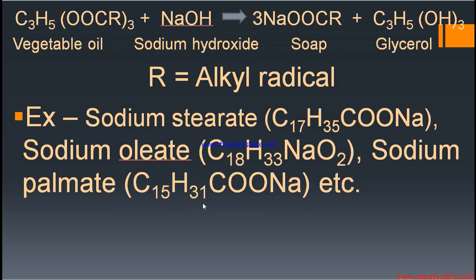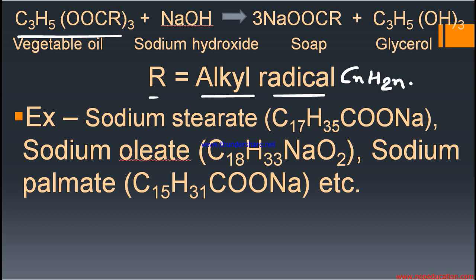For the chemical equation of how soap is prepared: the general formula of vegetable oil is C3H5(OOCR)3, where R is the alkyl radical. The alkyl radical has the general formula CnH2n+1, which is obtained by removing one hydrogen from an alkane. The product is the stearate of sodium, and the alkyl radical is present in it.